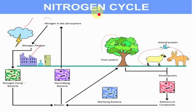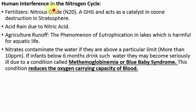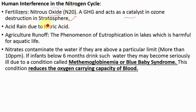Human beings are also interfering in the nitrogen cycle. Consider fertilizers — we are producing fertilizers in large amounts, which release a gas called nitrous oxide. Nitrous oxide is a greenhouse gas, and it also acts as a catalyst in ozone destruction in the stratosphere, which protects us from ultraviolet radiation. Also, acid rain takes place due to nitric acid — which is another adverse effect. Agricultural runoff causes the phenomenon of eutrophication in lakes, which is harmful for aquatic life.